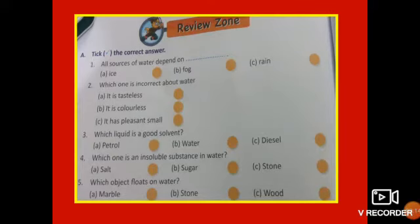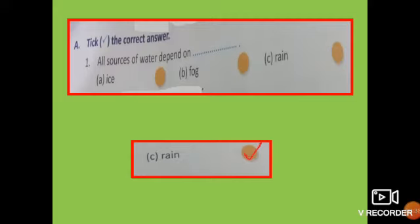Your first question is, tick the correct answer. Number 1. All sources of water depend on dash. Options are ice, fog or rain. So, the correct answer is rain, as rain is the main source of water.